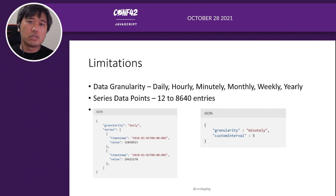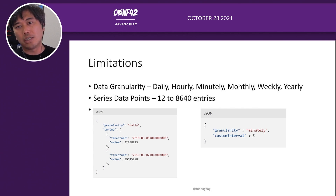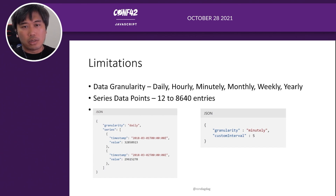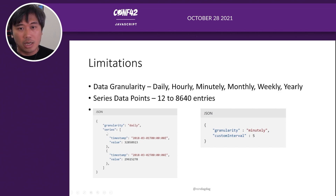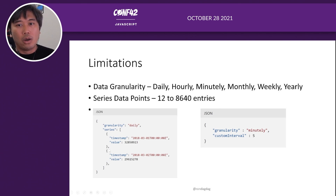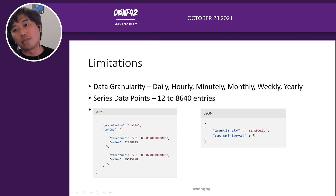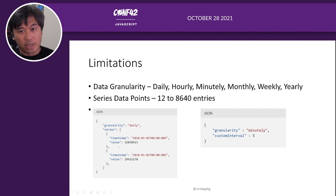There are some limitations to the Anomaly Detector API. Data granularity can be daily, hourly, minutely, monthly, weekly, or yearly. The series data you pass in is a JSON object with a series array of timestamp-value pairs. The minimum is 12 items and the maximum is 8,640. You also specify the granularity. If you want every five minutes, you specify a custom interval so the API knows the data is collected every five minutes.